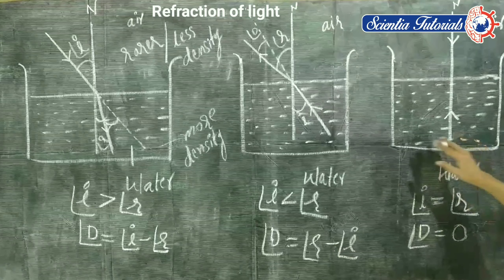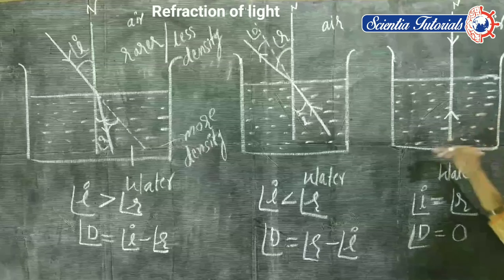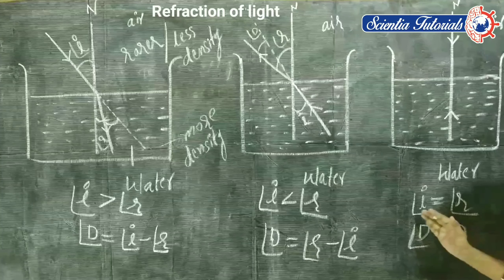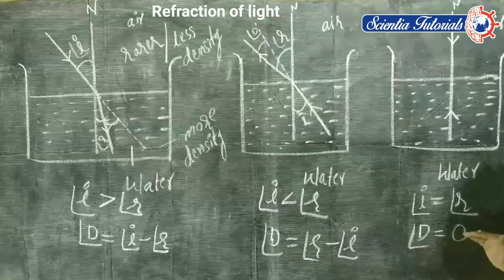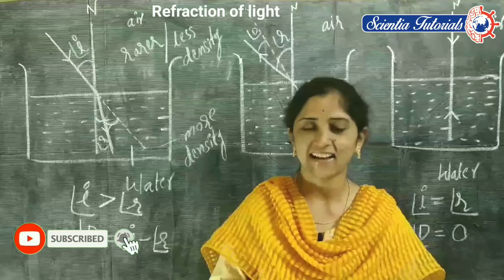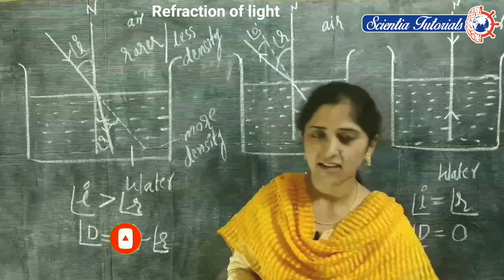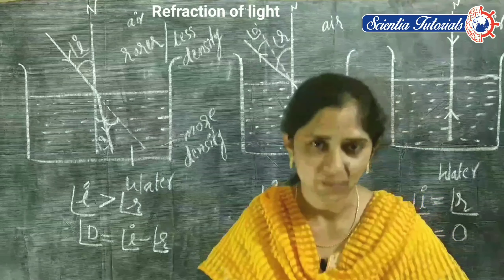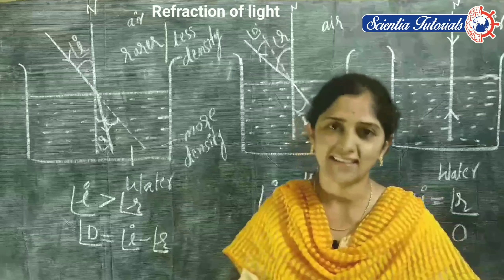In the third condition, when light travels along the normal, there is no deviation. Angle of incidence equals angle of refraction and angle of deviation equals zero. I hope you students understand this session about refraction of light — angle of incidence, angle of refraction, and angle of deviation when light travels from one medium to another. We will discuss the laws of refraction in detail in another session.